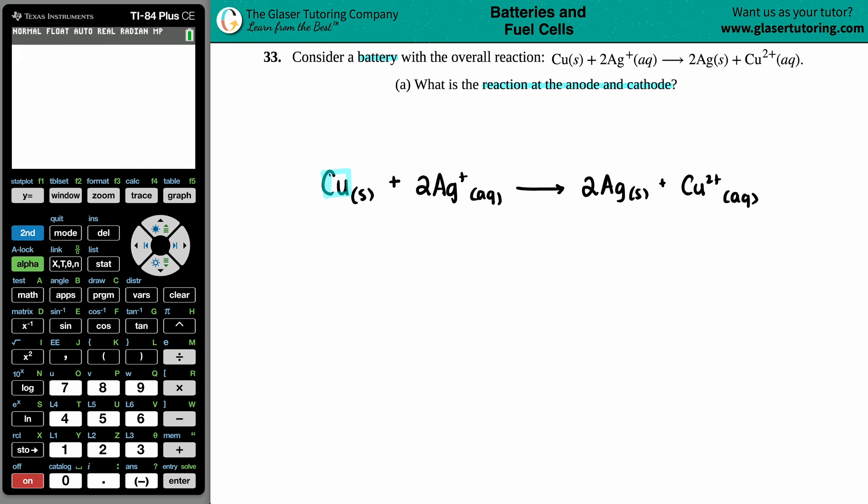So for example, this copper, the Cu, goes with this copper because copper is a copper. And then on the other side, you have the Ag+ and you have the silver, just Ag. So we have this as one half reaction and this as one half reaction.